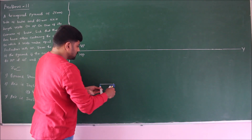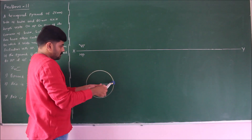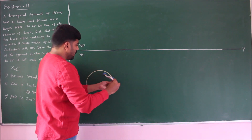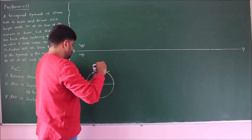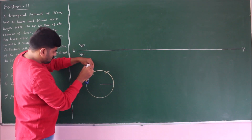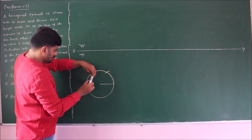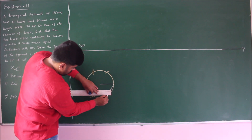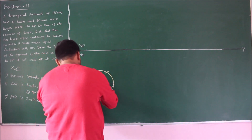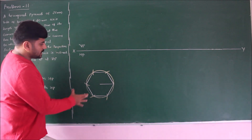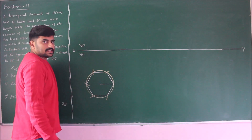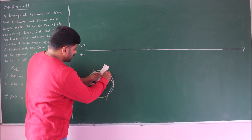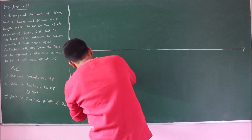Taking the 25 mm line as radius, construct a circle. With the same length, cut equal arcs and join these arcs to get the hexagon. This completes the hexagon with a corner on either side.